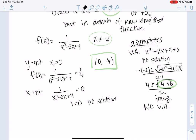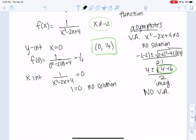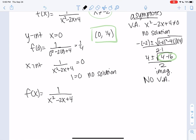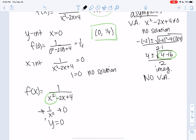And then our last thing, is there a horizontal or a slant? So since the degree on bottom is bigger, it means 0, right? Because it goes to 1 over x squared, which goes to 0. So y equals 0 is an asymptote.